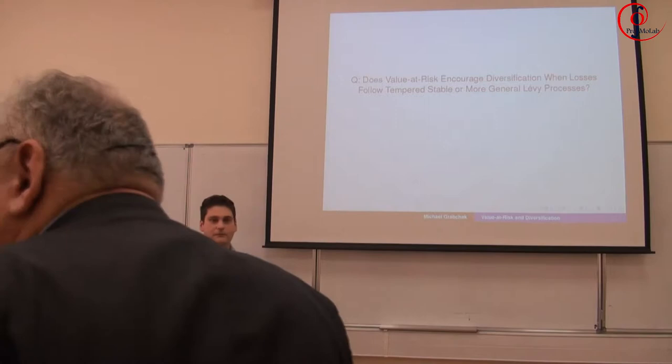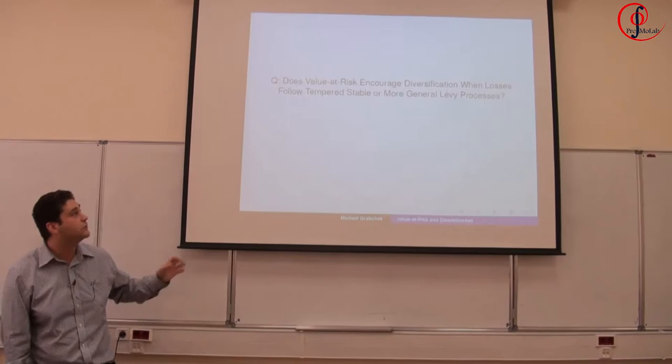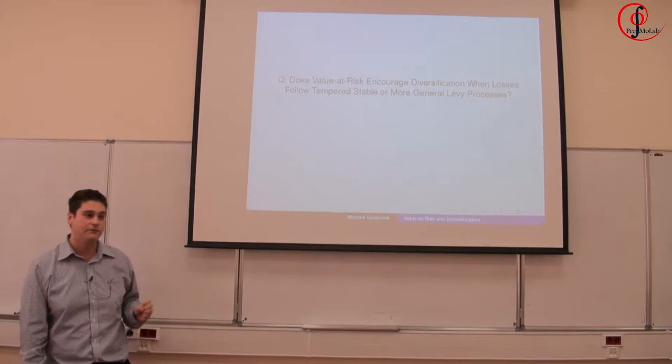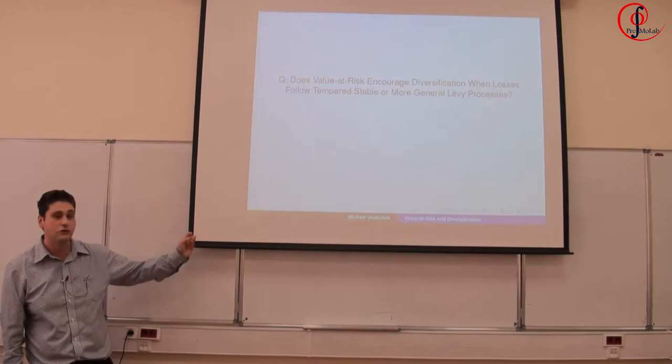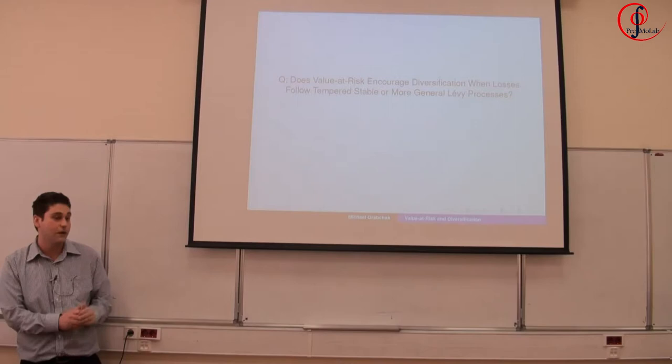The talk has a somewhat long name, but the name is kind of a question: does value at risk encourage diversification when losses follow a tempered stable or more general Lévy process? I assume most of you are familiar with most of the terms here, maybe not exactly tempered stable, but I will talk about them quite a bit more.